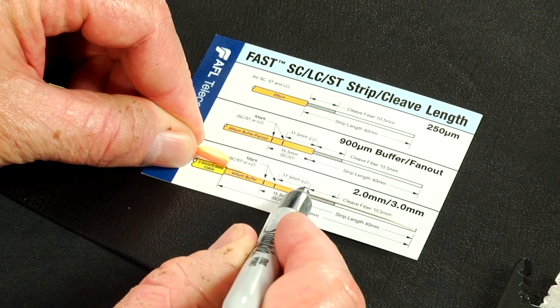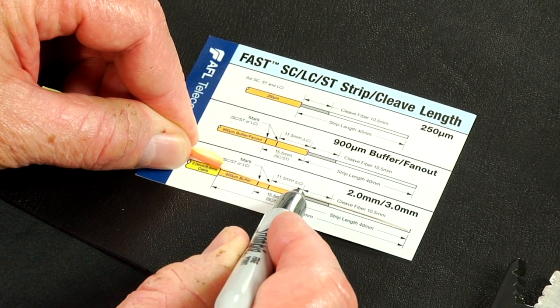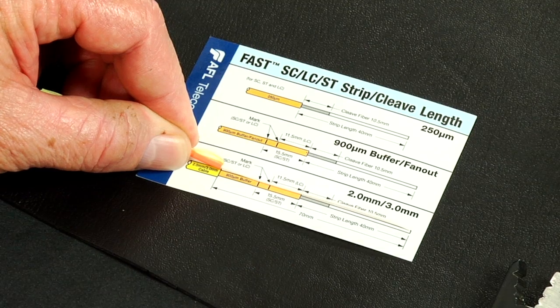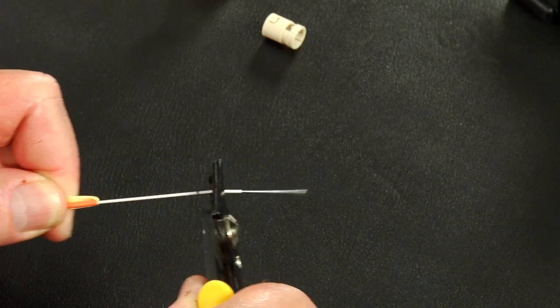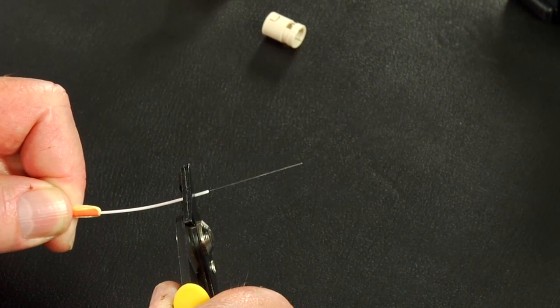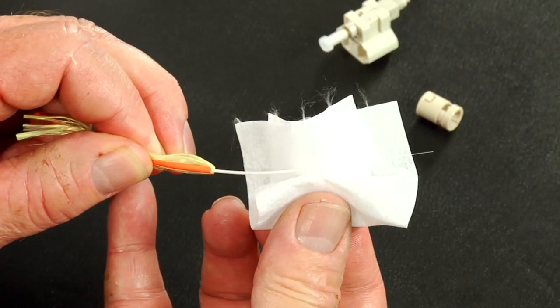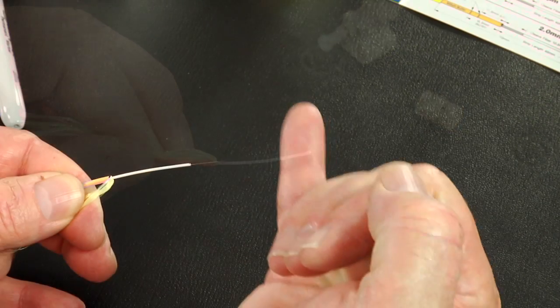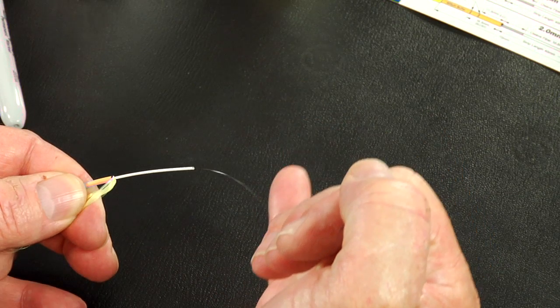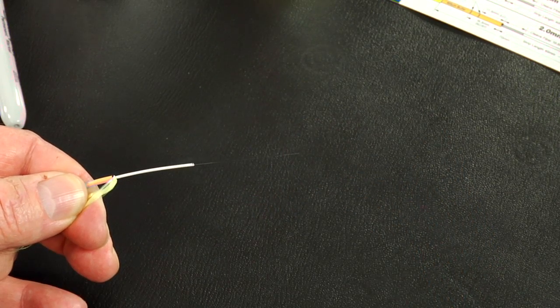Refer to the strip template and mark the 900 micron fiber at 35 millimeters from the end of the fiber. Strip 35 millimeters of 900 micron coating from the fiber. Clean the bare fiber using a lint-free wipe moistened with fiber preparation fluid or 95% or better isopropyl alcohol. Flick the fiber to verify integrity.